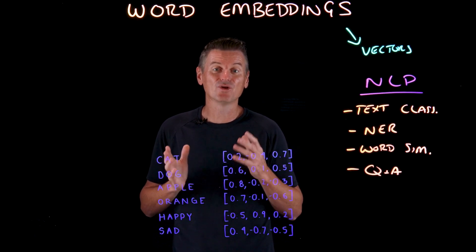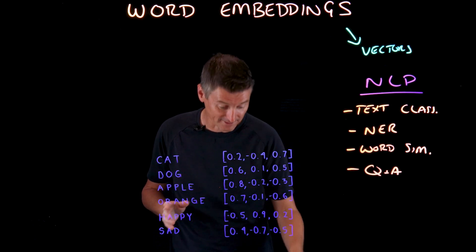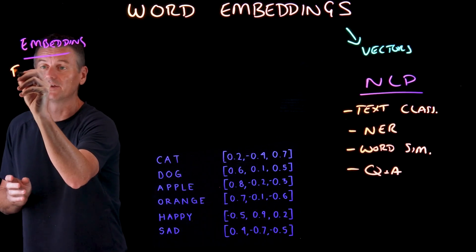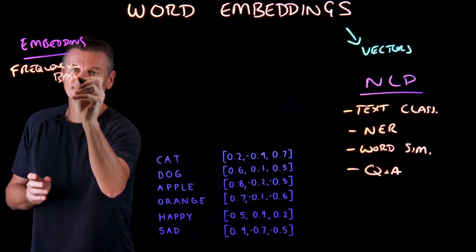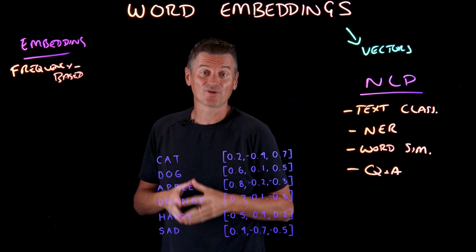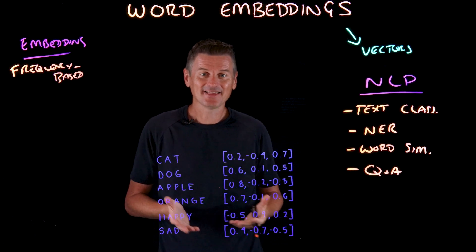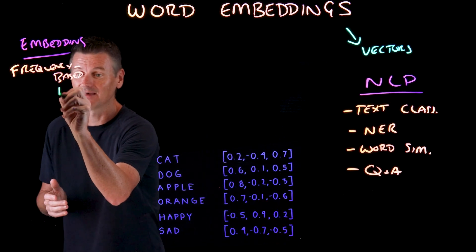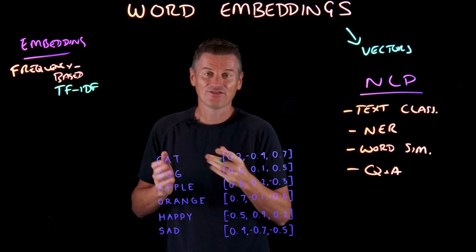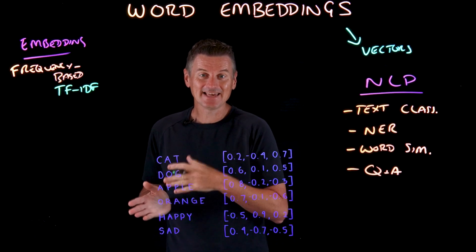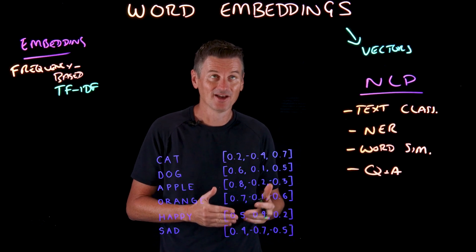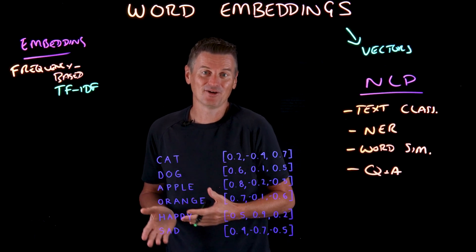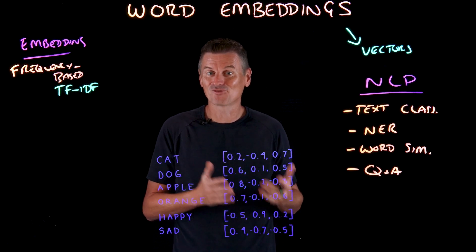There are two fundamental approaches to how word embedding methods generate vector representations for words. The first is frequency-based embeddings — word representations derived from the frequency of words in a corpus, based on the idea that the importance of a word can be inferred from how frequently it occurs. One such method is TF-IDF, which stands for Term Frequency Inverse Document Frequency. TF-IDF highlights words that are frequent within a specific document but rare across the entire corpus. For example, in a document about coffee, TF-IDF would emphasize words like espresso or cappuccino, which appear often in that document but rarely in others.